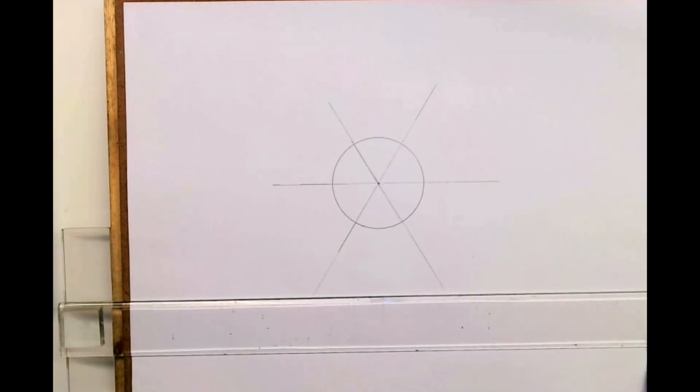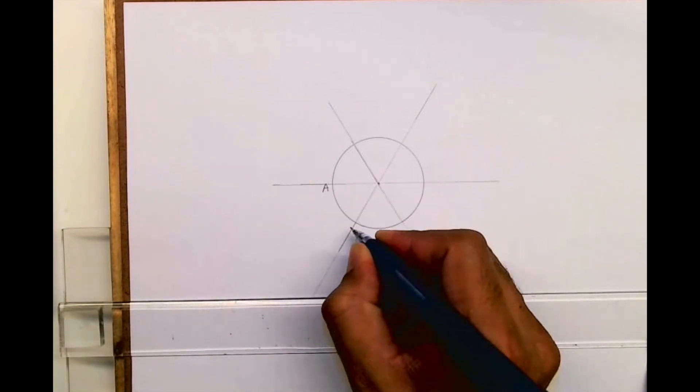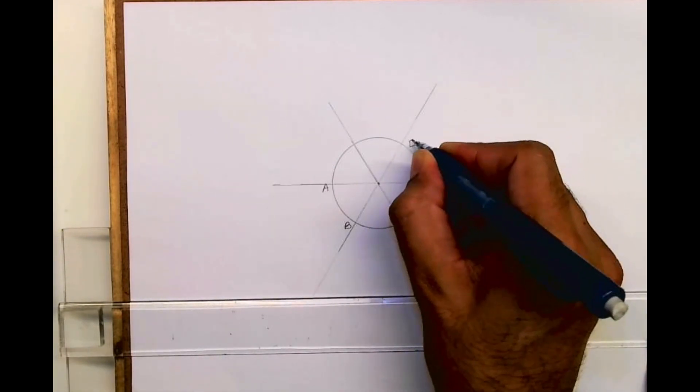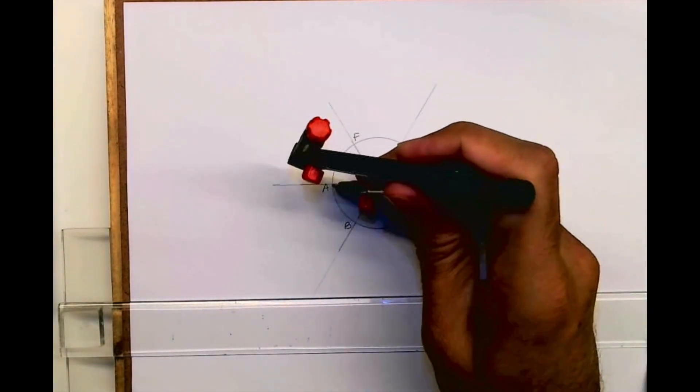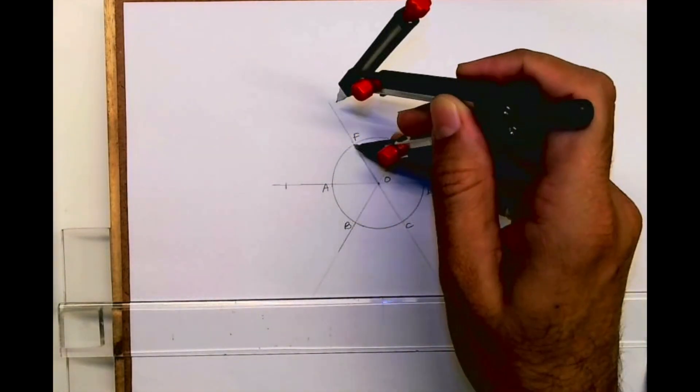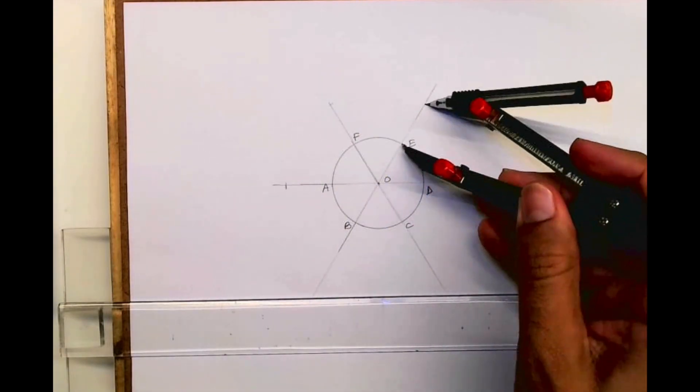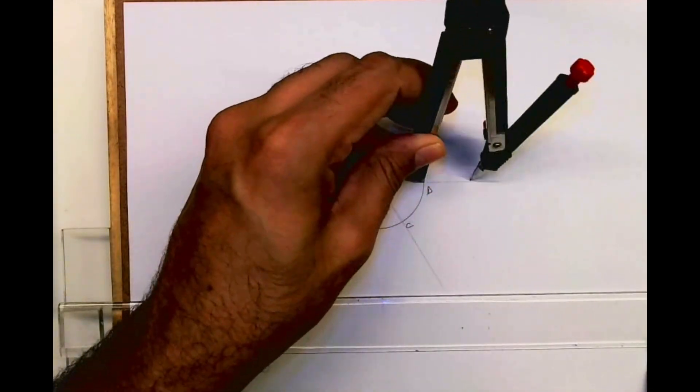Now after that, this is point A, B, C, D, E, F, and this is O. Then we'll take O to A and we'll cut here, O to F. So everywhere we'll cut equal to the radius.